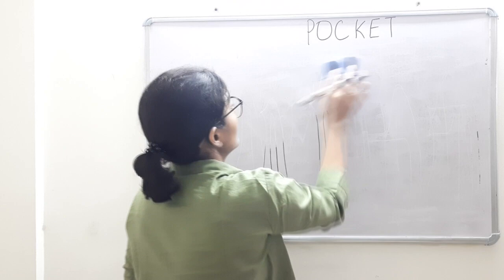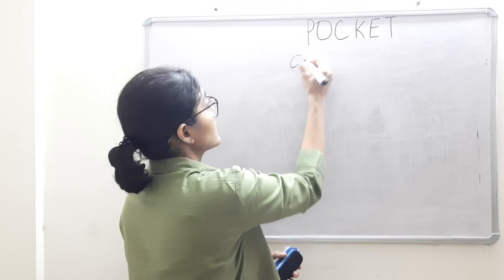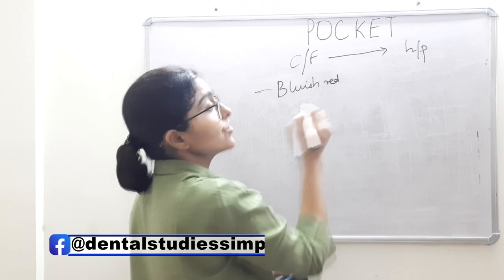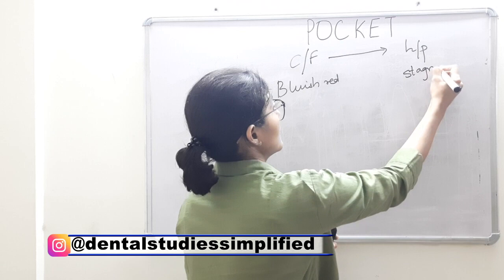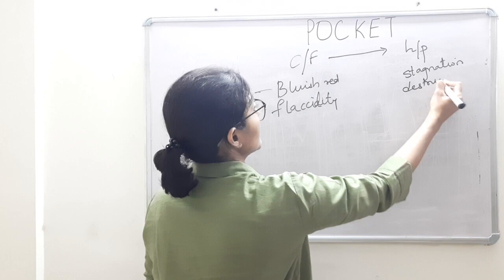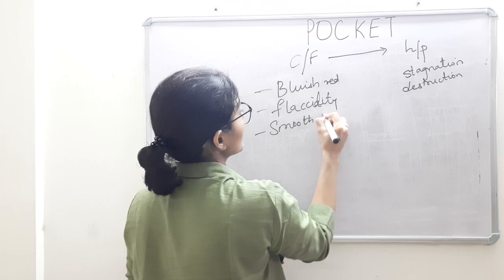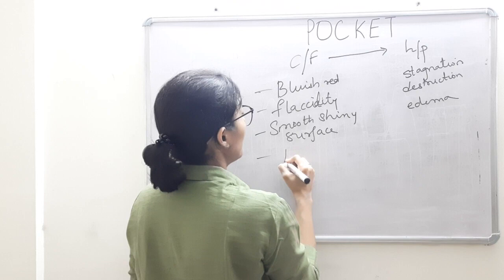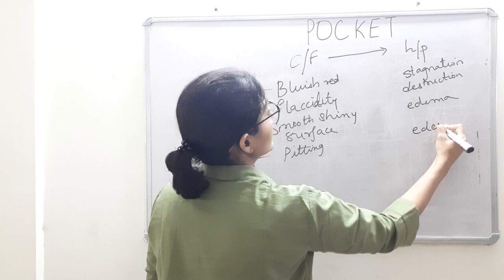Talking about the clinical features: first is the color — bluish-red discoloration, which is due to circulatory stagnation. Then we have flaccidity of the tissues because of the destruction of the fibers. We have smooth, shiny surface because of edema and inflammation. Then we have pitting, again because of the edematous tissue.